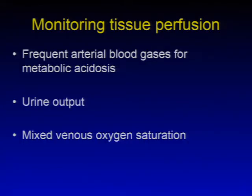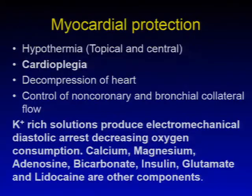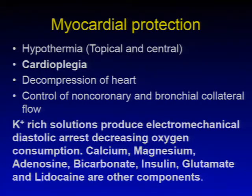Monitoring tissue perfusion during CPB is done by frequent arterial blood gases for metabolic acidosis, urinary output as a marker of tissue perfusion, and mixed venous oxygen saturation measured in the venous circuit as an indicator of global wellness. Myocardial protection is achieved by topical and central hypothermia. Cardioplegia is administered to protect the heart during aortic cross-clamping. Decompression of the heart is important to avoid LV or RV distension, which can compromise coronary perfusion.